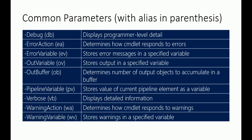The common parameters include: Debug — you can use -Debug in your command line to display programmer-level details. ErrorAction determines how the cmdlet responds to an error. ErrorVariable stores error messages in a specified variable. OutVariable stores output in a specified variable. OutBuffer determines the number of output objects to accumulate in the buffer. PipelineVariable stores the current pipeline element as a variable. Verbose displays detailed information. WarningAction determines how the cmdlet responds to warnings, and WarningVariable stores warnings in the specified variable.